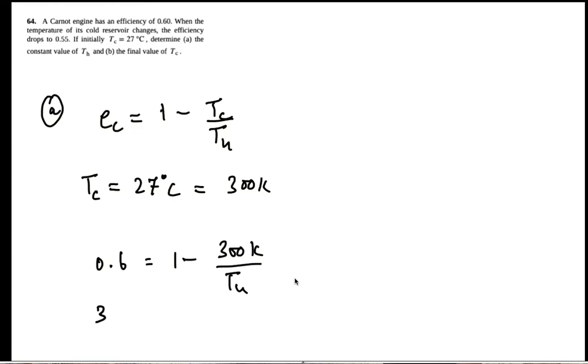So 300 divided by 0.4 equals Th. 300 K divided by 0.4 gives 750 Kelvin.